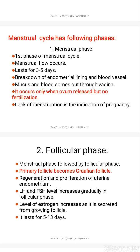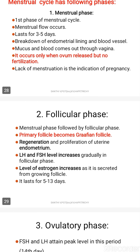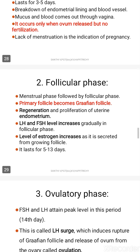The endometrial lining along with the blood vessels breaks down, which is why the menstrual flow occurs. It occurs only when there is no fertilization — the ovum is released but there is no fertilization, and then only the menstrual phase occurs. When there is lack of menstruation, it indicates pregnancy.